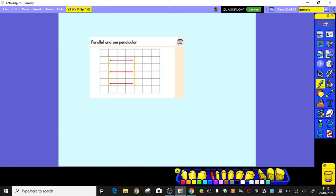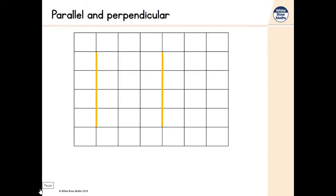Today we're going to look at two more really useful words when we're thinking about lines and shapes: parallel and perpendicular. You may have heard parallel before — possibly not perpendicular. Perpendicular is a word really used in maths and possibly architecture. Parallel is possibly a bit more of a common word in everyday use. Here we've got two lines, and we can say that these lines are parallel. Anywhere down the line, we can see the two lines are three squares apart.